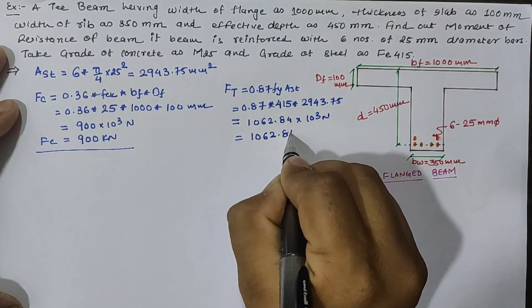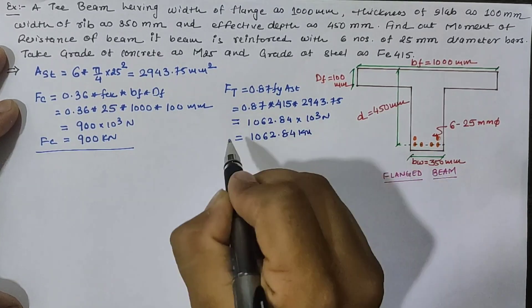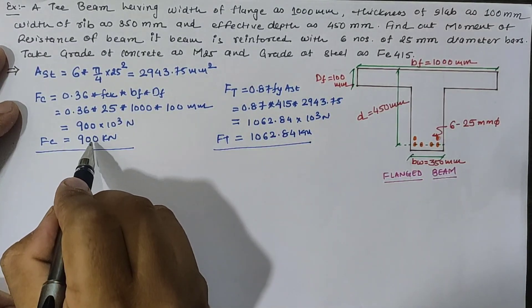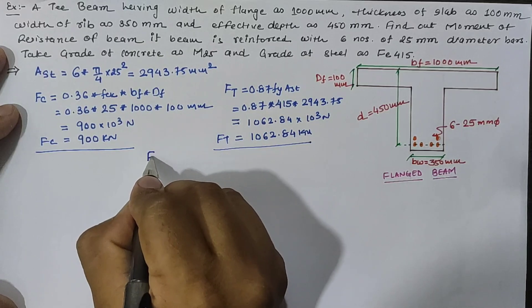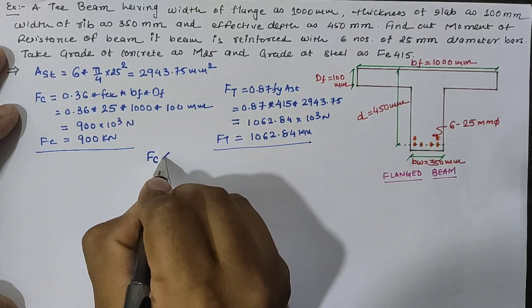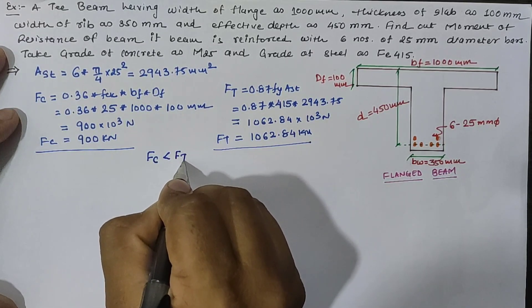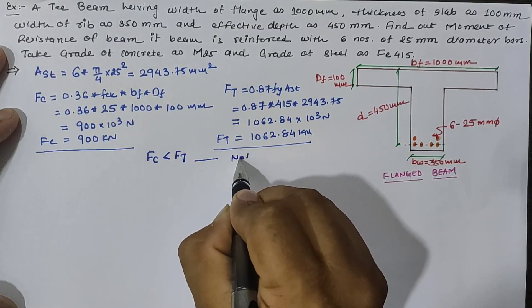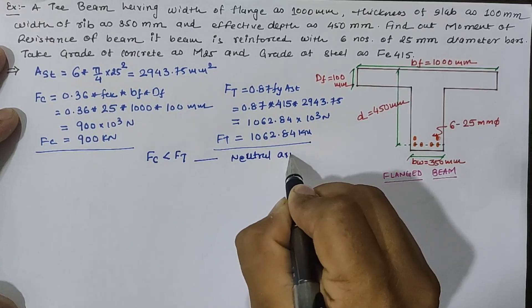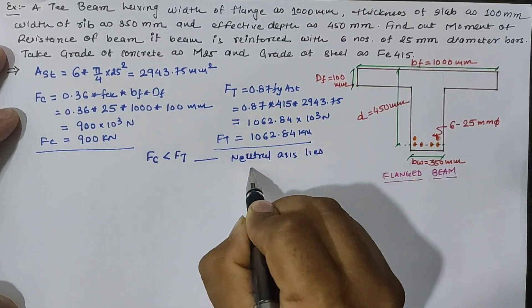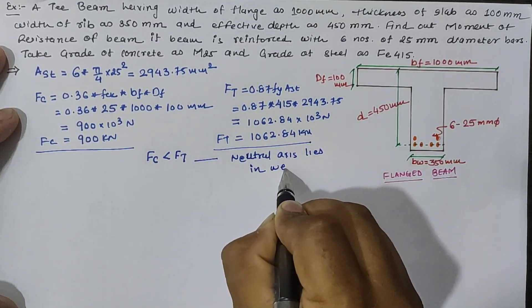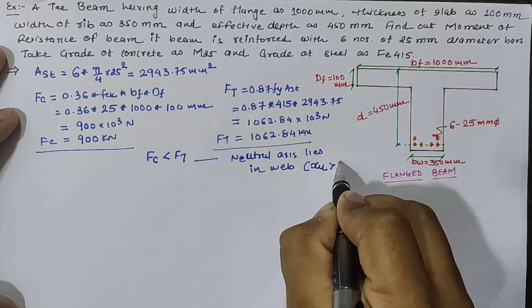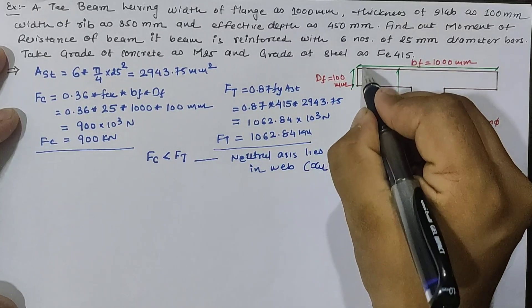So our tensile force is 1062.84 kN while compression force is 900 kN. It means that our force in compression is less than our force of tension, so our neutral axis must lie in the web, or we can say that our xu value must be greater than the value of depth of flange.